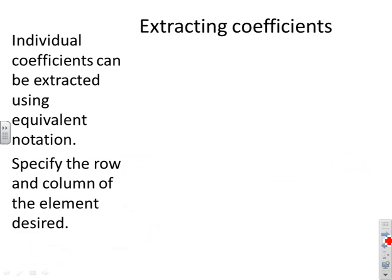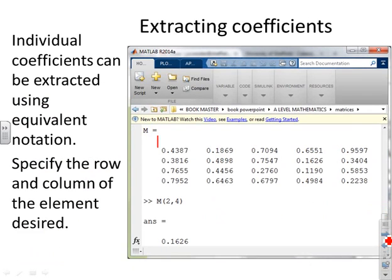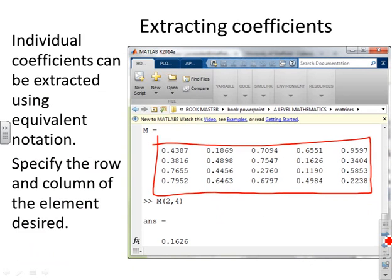Extracting coefficients. This is implicit in what we said before, but individual coefficients can be extracted using the equivalent notation. Here you'll notice I've got a large M matrix, it's 4 by 5. If I want the second row, fourth column, which is here, second row, fourth column, I just write M(2,4) and out comes the value.